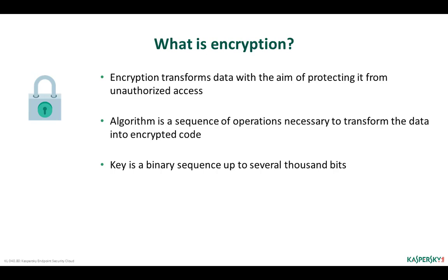To ensure message confidentiality, the secret must be known only to the sender and recipient. In the early days of encryption, the encryption algorithm itself was typically kept secret. However, this approach is not very useful — if the algorithm leaks out, it will have to be replaced completely. Modern encryption tools use known data transformation algorithms; what is secret in this case is a special parameter of the algorithm: a key.